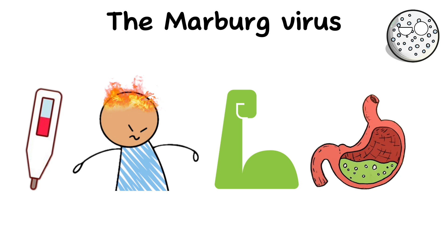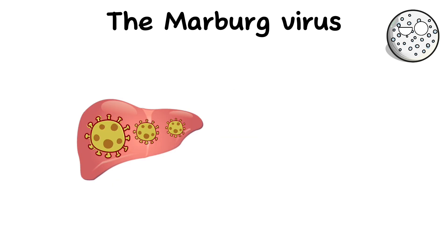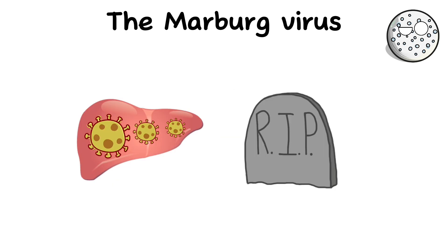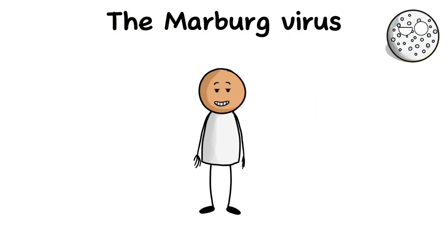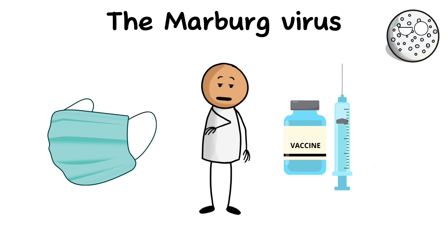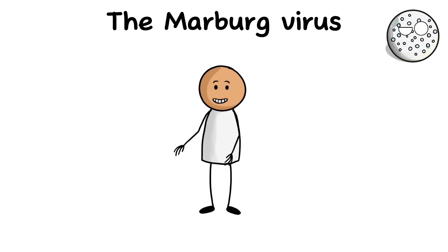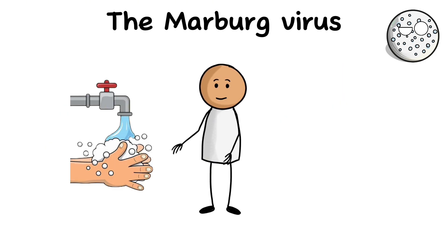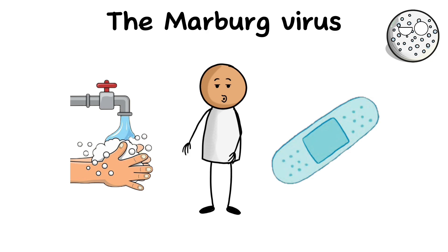Additional symptoms include nausea, vomiting, diarrhea, and internal and external bleeding. In severe cases, acute renal failure, hypovolemic shock, and organ failure may develop, which can lead to death. Treatment of the Marburg virus is limited to symptomatic therapy to relieve symptoms and maintain organ function. Prevention includes hygiene control, the use of protective equipment when working with infected materials, and isolation of infected patients.